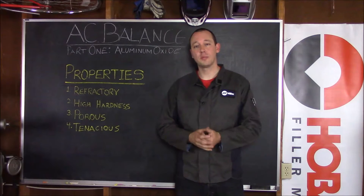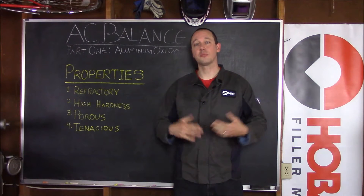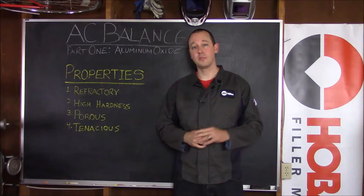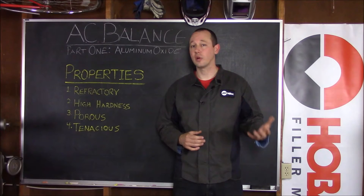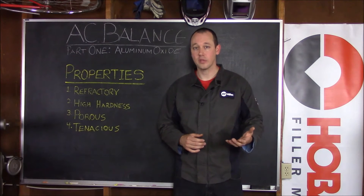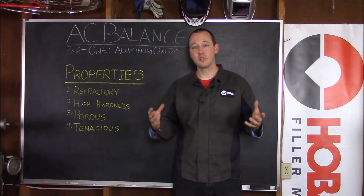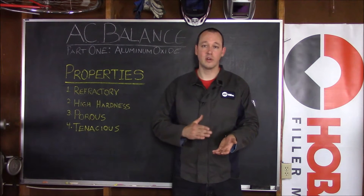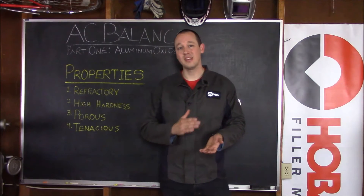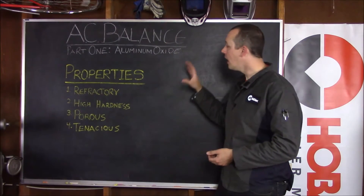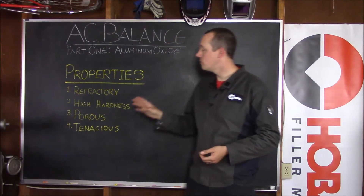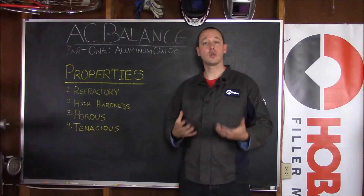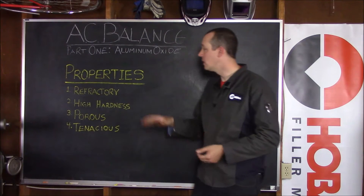The first thing about aluminum oxide is that it is present on the exterior surface of every single piece of aluminum that you or I have ever come into contact with. If you expose aluminum to an atmosphere that has oxygen in it, that oxide layer forms instantaneously, and it has some really unfortunate characteristics that make it troublesome for us when we're trying to weld our aluminum.